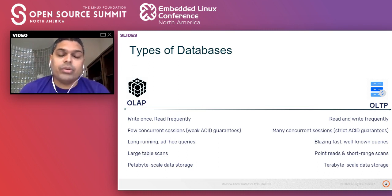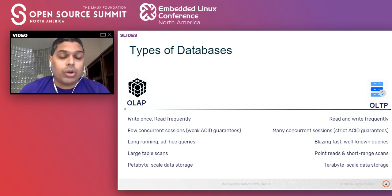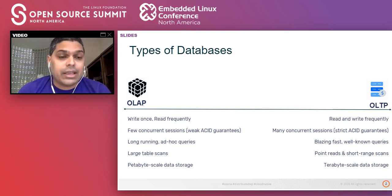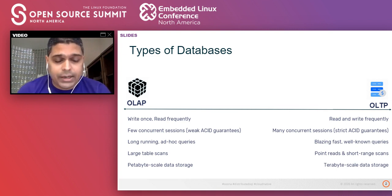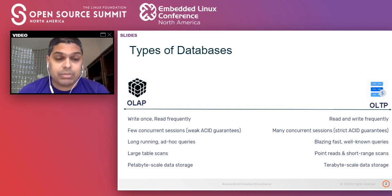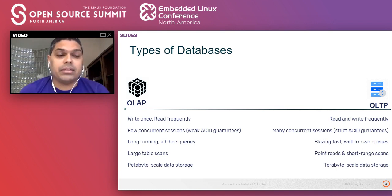OLAP databases are about write once and read frequently. They do not have too many concurrent sessions. As a result, they provide weaker ACID guarantees. They do support long-running and more ad hoc interactive style queries — basically, the queries are not known beforehand. They involve scanning through large amounts of data, large table scans.